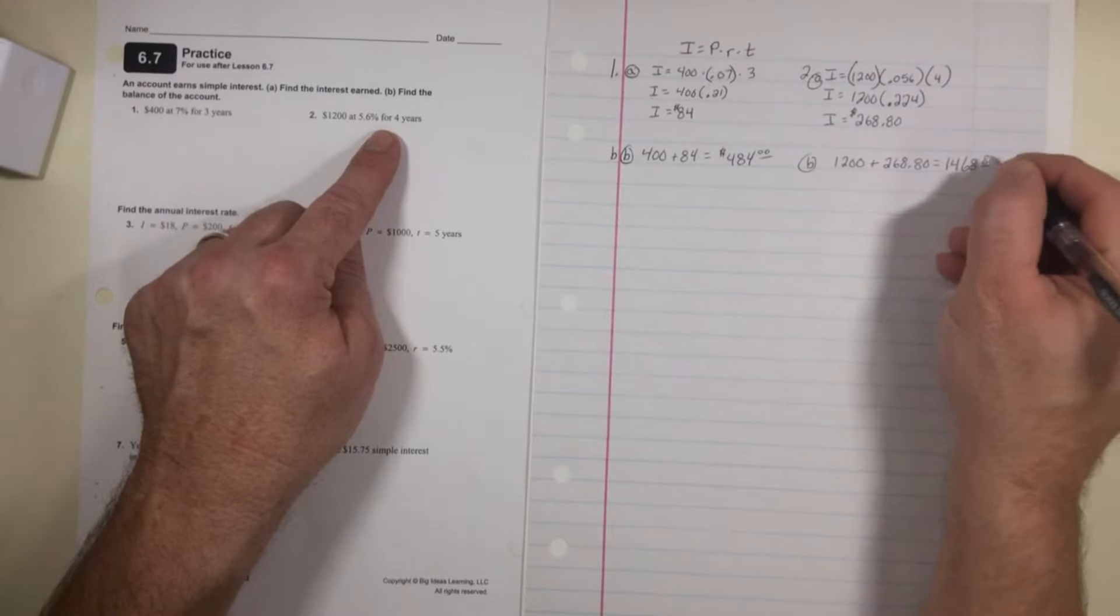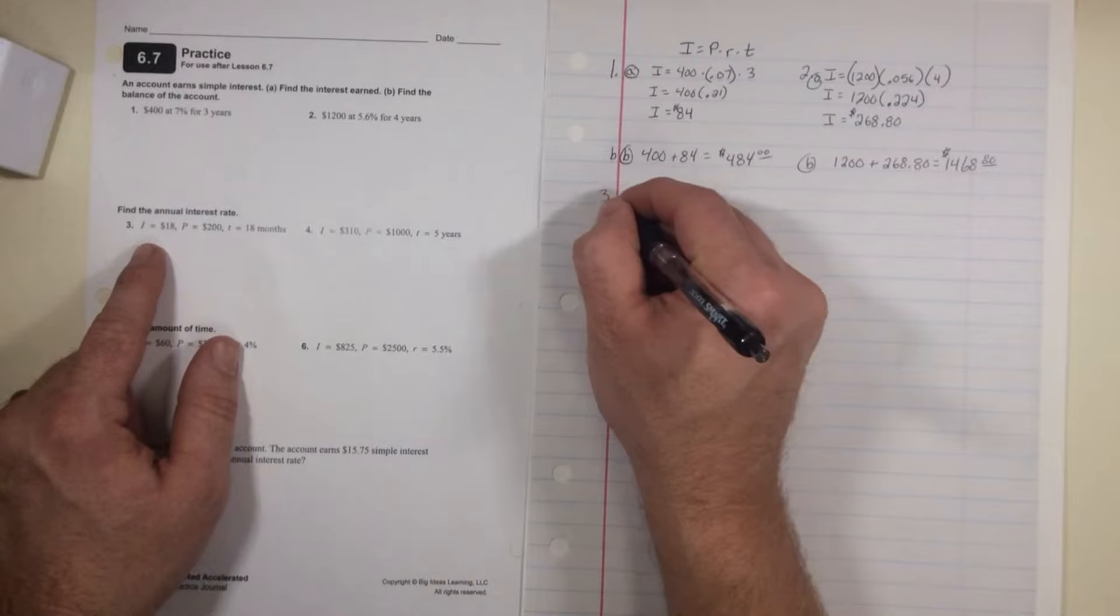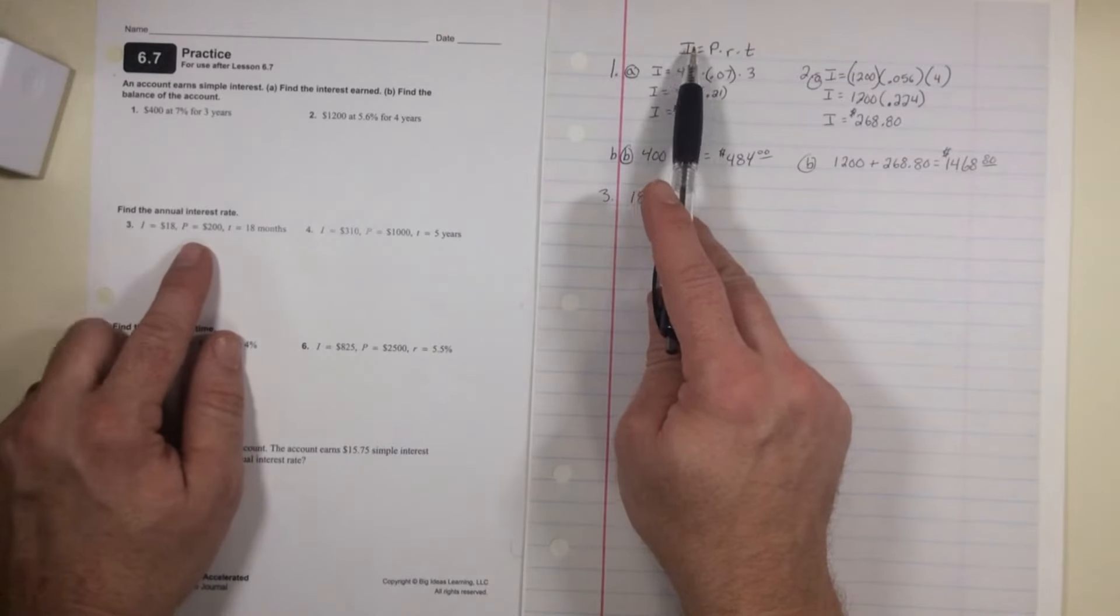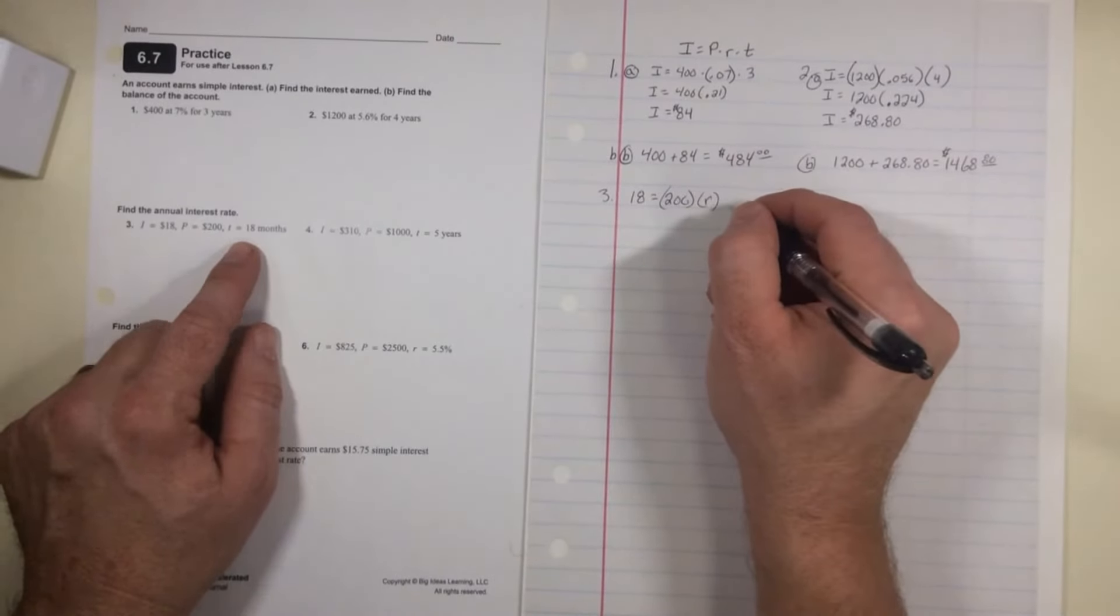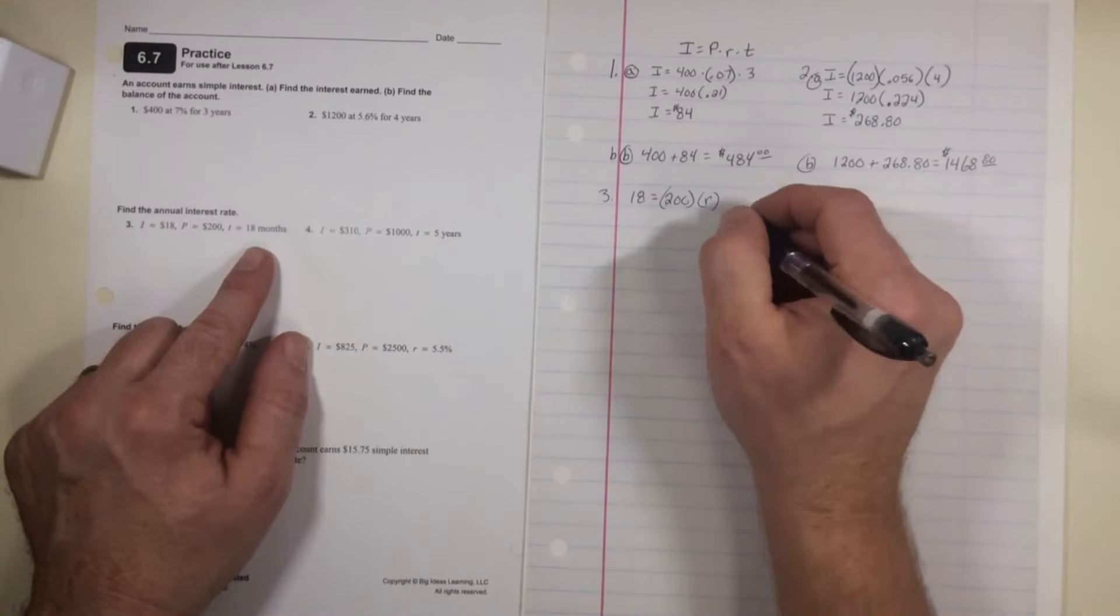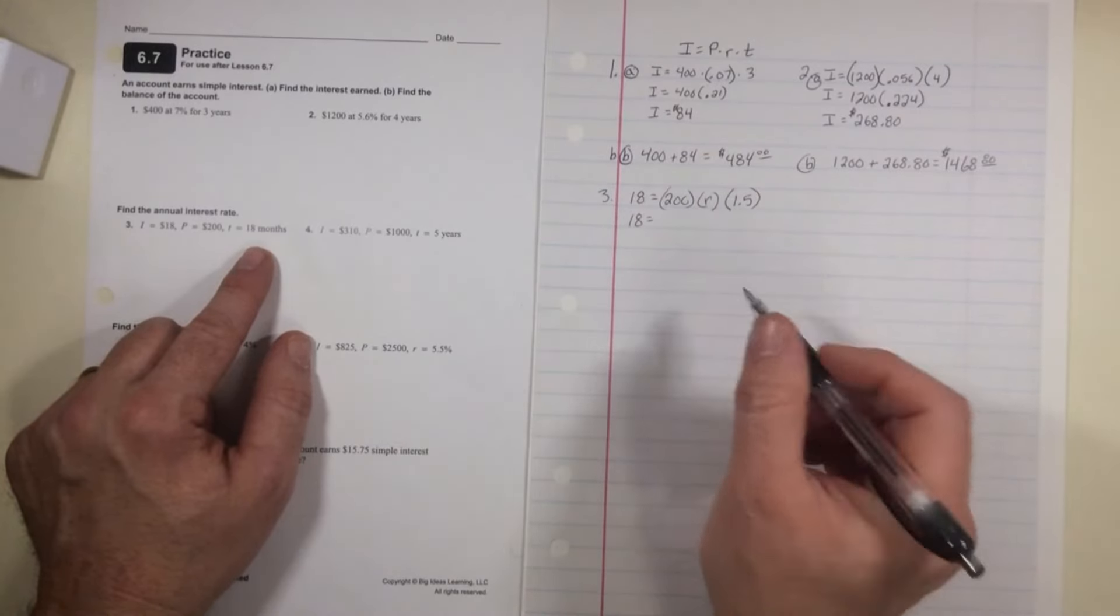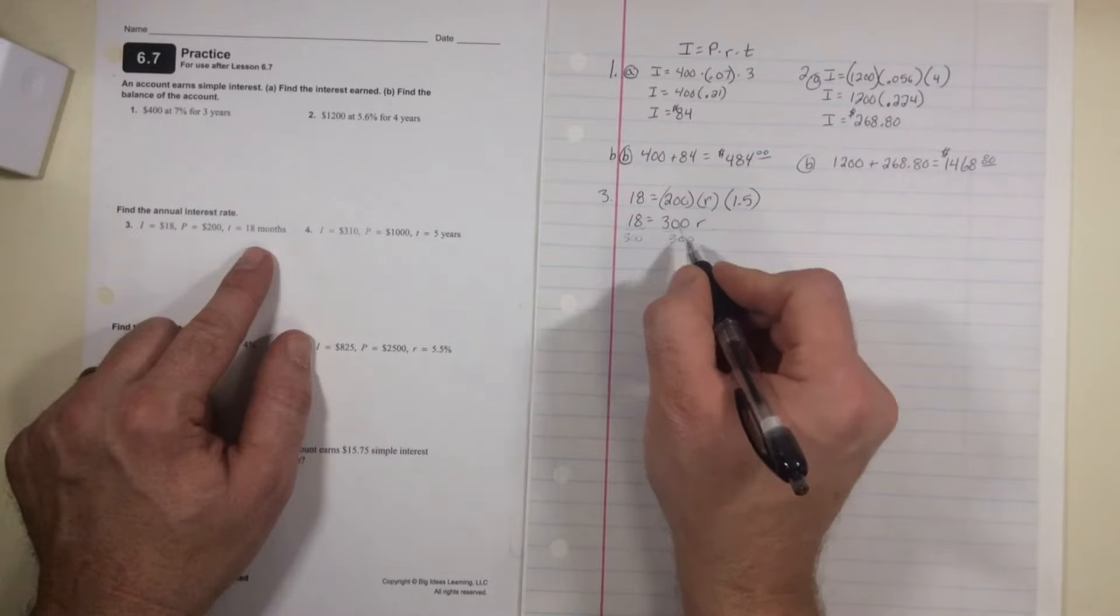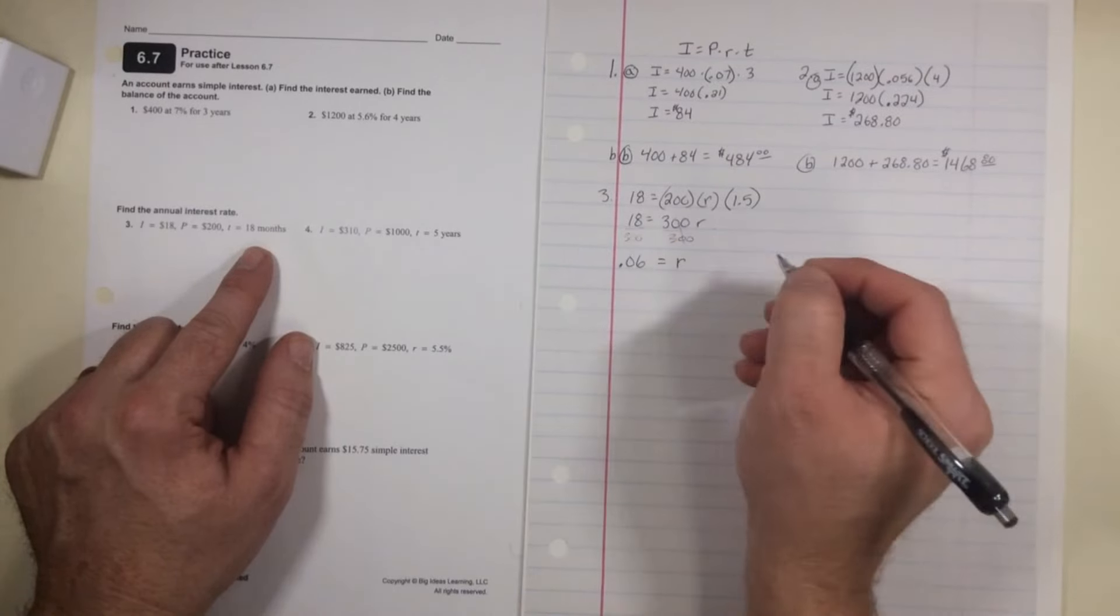Down here I'm finding the interest rate. So they give me the interest dollars, remember I'm plugging it into here, so the interest equals principal times rate times time. The principal is $200, the rate is what I'm looking for so I'll just put in an R for that, and the time is 18 months. Well, this is an annual interest rate, so how many years is that? 18 months is 1.5 years, so I have to use 1.5 for the time. So now I have 18 equals, well 200 times 1.5 is 300 times R. Divide both sides by 300, and R equals for number three 0.06, which is the same as 6%.